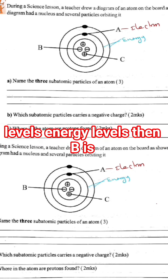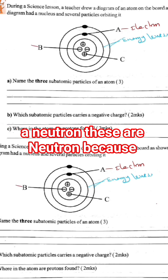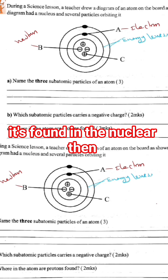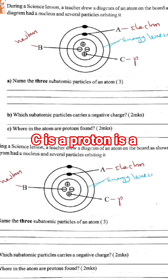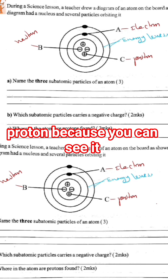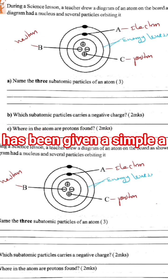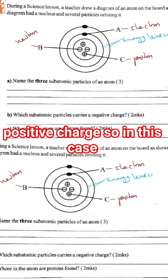Then B is a neutron because it's found in the nucleus. C is a proton because you can see it has been given a positive charge.